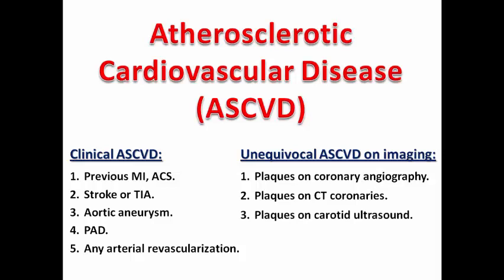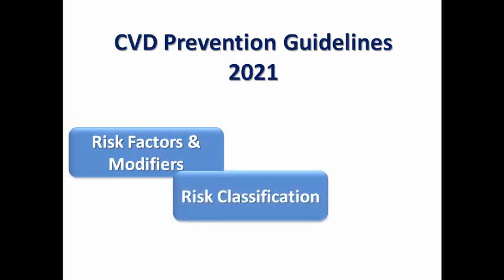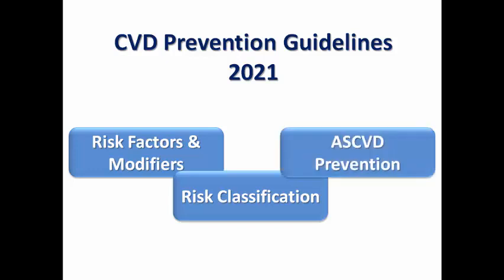The term atherosclerotic cardiovascular disease doesn't include only coronary artery disease — it includes atherosclerosis in any vascular bed. The guidelines this year focus on three main aspects: risk factors and modifiers, risk classification (or risk stratification), and atherosclerotic cardiovascular disease prevention.